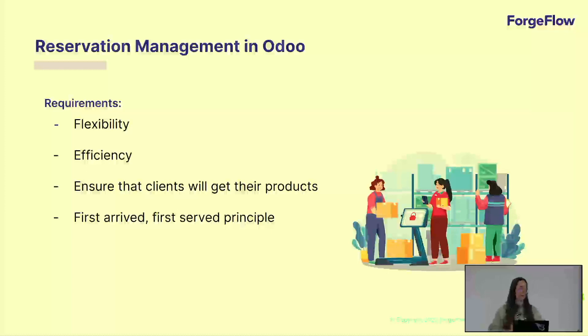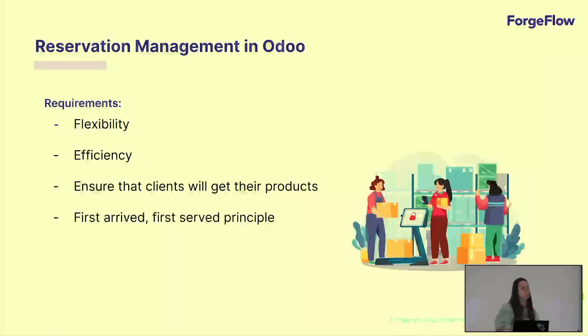Also, it's important to ensure that clients will get their products, and to do that it's important to have tracking of all products available and all products that are reserved and that we have in stock. And then there is the first-arrive, first-served principle, meaning that the first sale orders and first demands that have been created in our system have to be the first orders to be fulfilled.